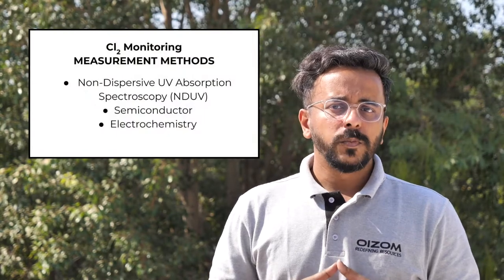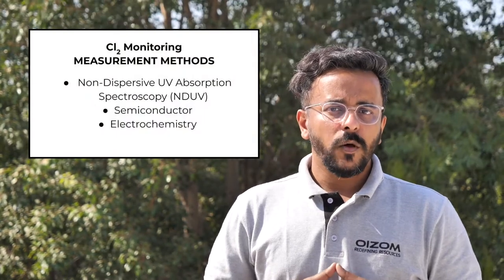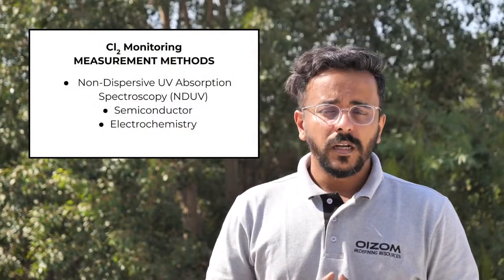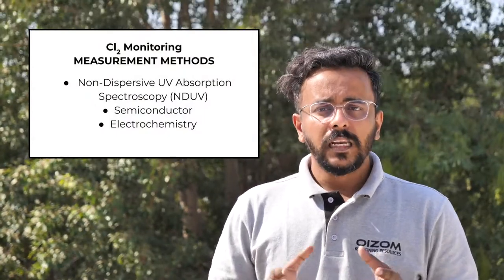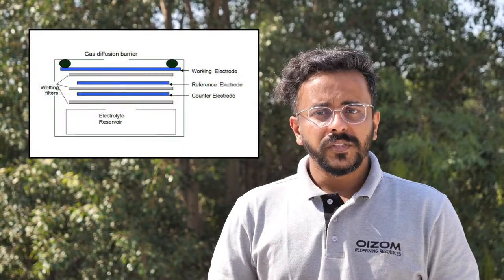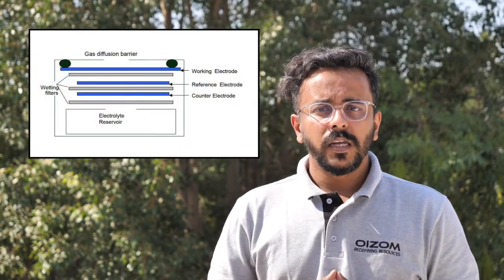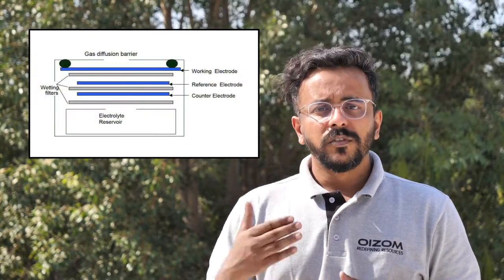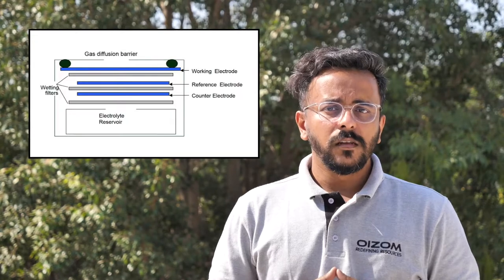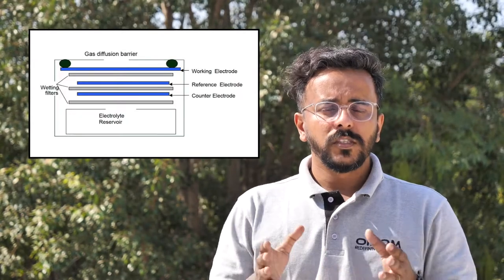Different working principles for chlorine monitoring in the ambient environment are pulsed ND-UV, i.e., non-dispersive UV absorption spectroscopy, semiconductor, and electrochemistry. At Oizom, we measure chlorine on the principle of electrochemical sensing. It operates based on diffusion of chlorine molecules into the sensor, which results in the production of an electrical signal proportional to its concentration.